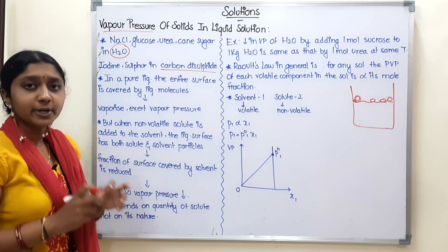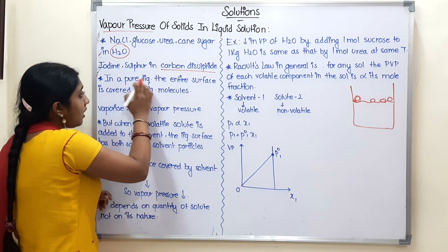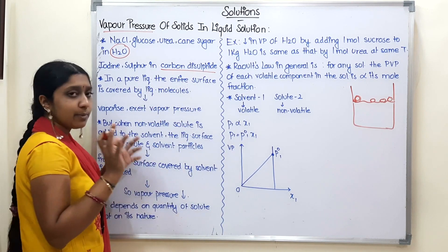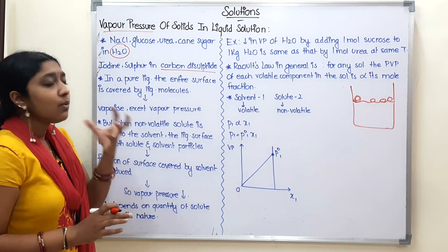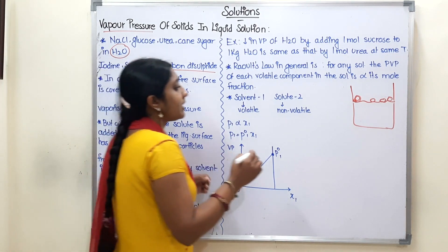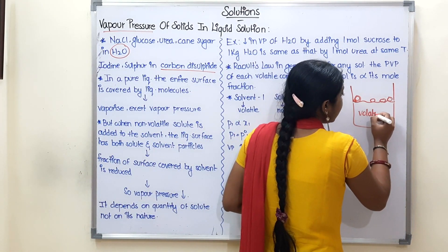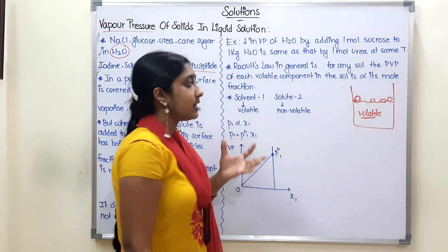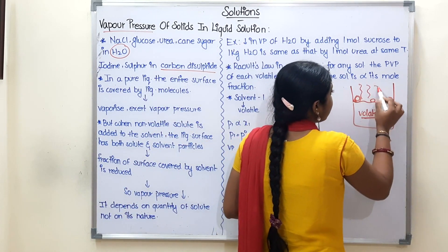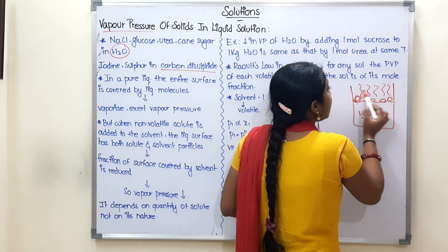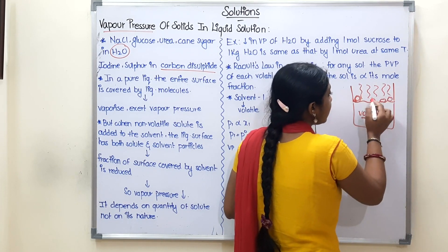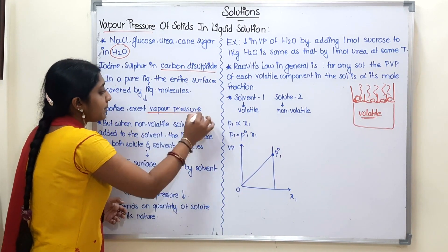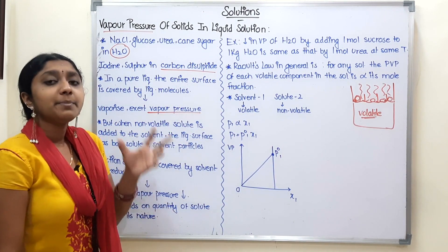This is a pure liquid. The entire surface is covered by liquid molecules. Suppose that liquid is volatile — volatile means it easily evaporates. So we can easily evaporate this liquid. And the vapors exert a pressure on the liquid surface. What is the name of that pressure? Vapor pressure.